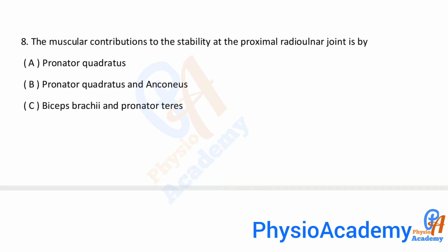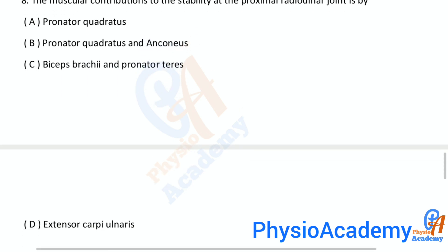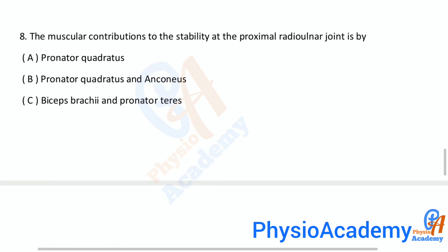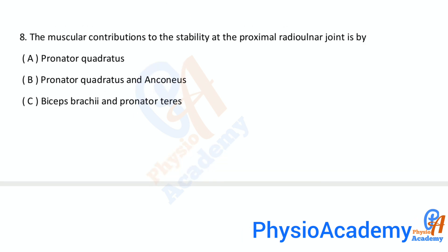Question number eight: The muscular contributions to stability at the proximal radio-ulnar joint is: A) pronator quadratus, B) pronator quadratus and anconeus, C) biceps brachii and pronator teres, D) extensor carpi ulnaris. The correct answer is option C: biceps brachii and pronator teres.